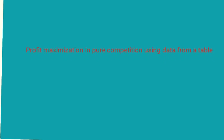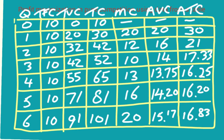In the last section we looked at profit maximization using a graph. Here we're going to look at how to maximize profits for a firm in pure competition using data from a table. The table has quantity ranging from 0 to 6, total fixed cost (TFC), total variable cost (TVC), total cost (TC, the sum of TFC and TVC), marginal cost (MC), average variable cost, and average total cost.